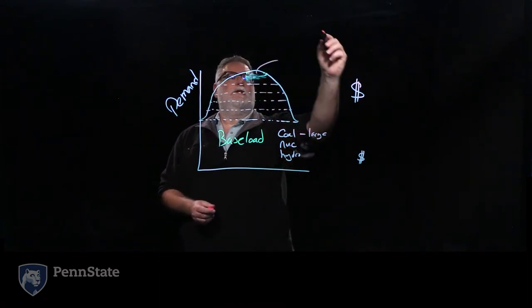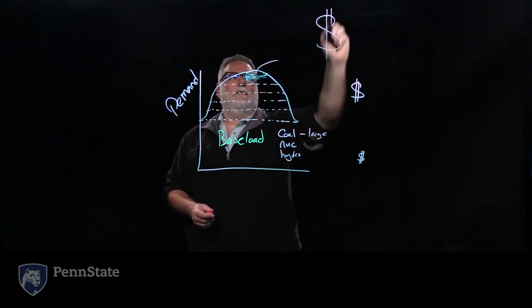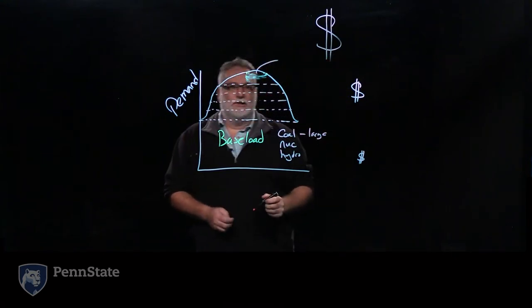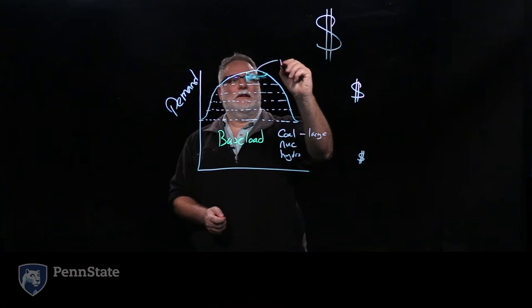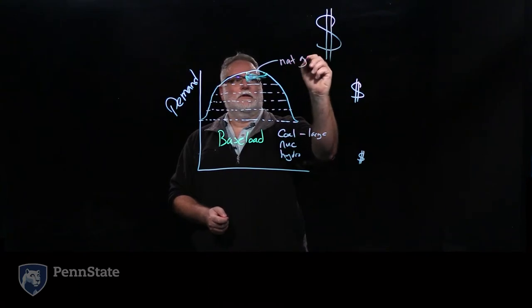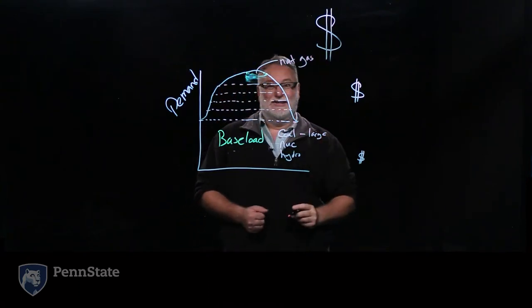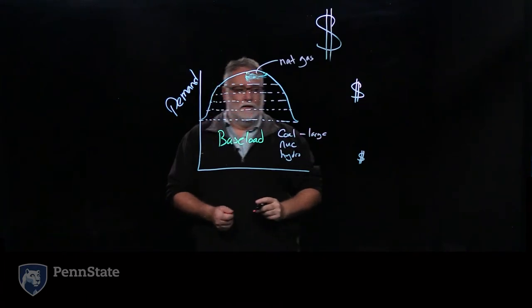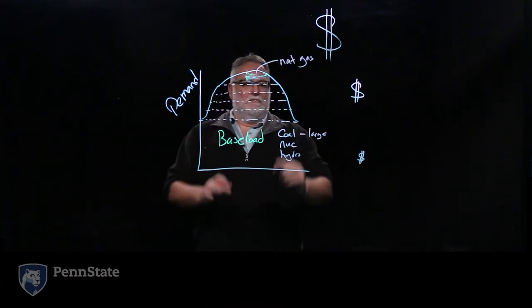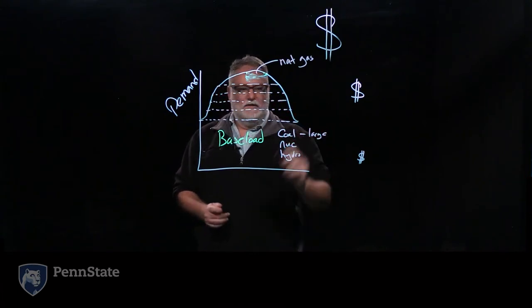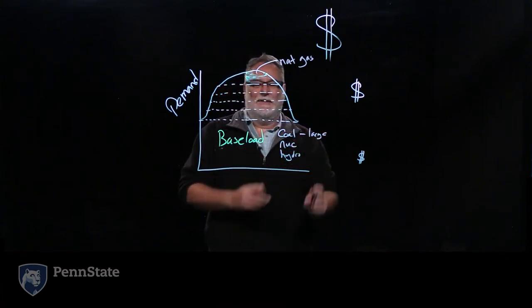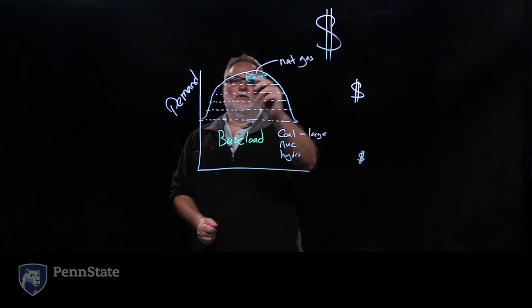And at the peak, we were paying much more for that electricity generation. And so, again, in the old regulated days, this would have been natural gas because it was expensive. But we would turn on more power plants. We would have the cheapest running the longest time and running at the higher capacity. And then we would turn more and more on.